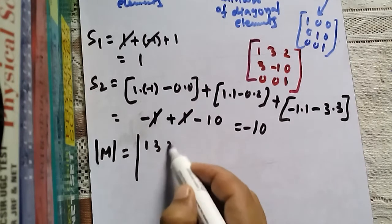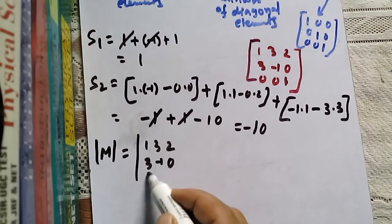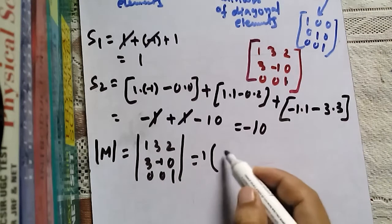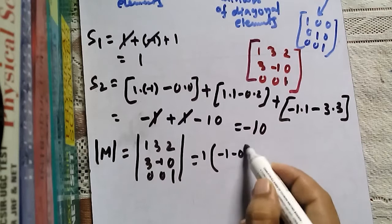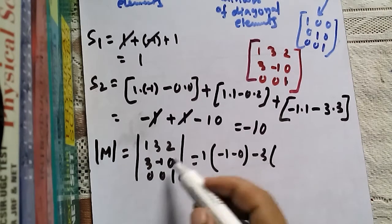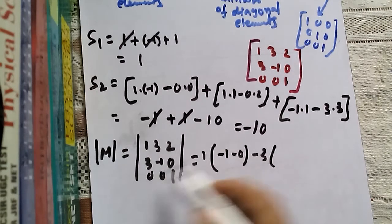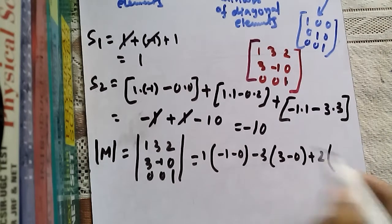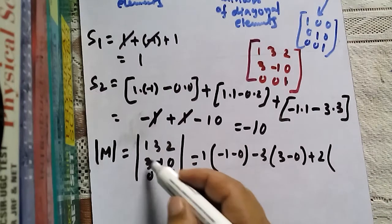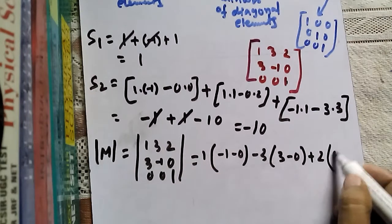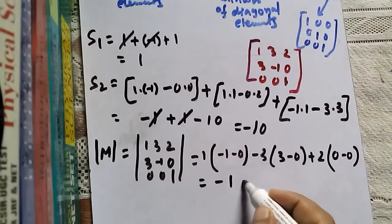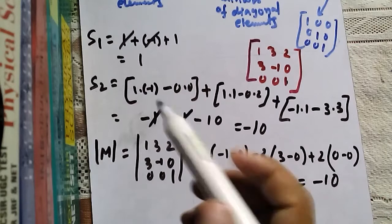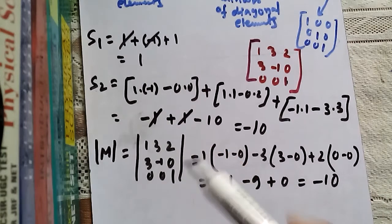Now we find det(M). det(M) = 1×(−1 − 0) − 3×(1×3 − 0×0) + 2×(0×0 − 0×(−1)) = −1 − 9 + 0 = −10. So we have found S1 = 1, S2 = −10, and det(M) = −10.